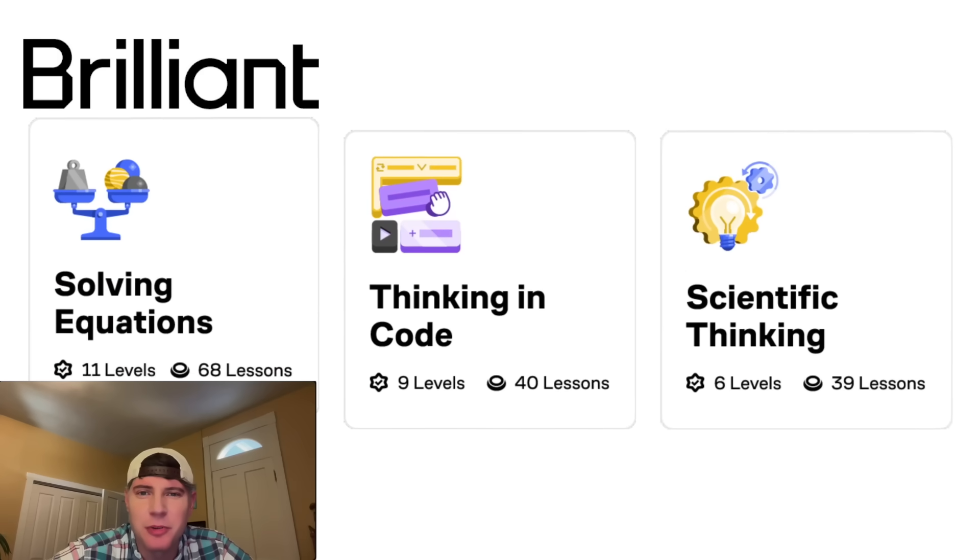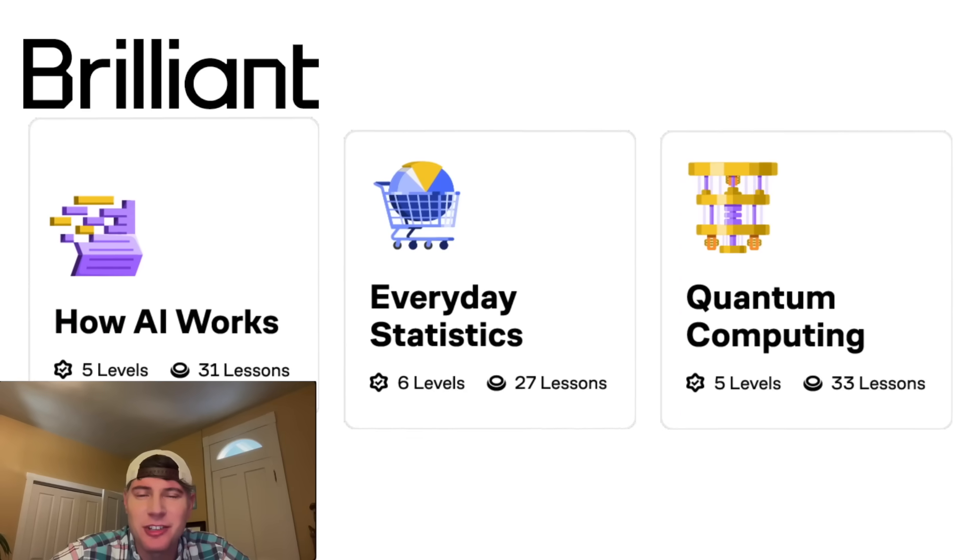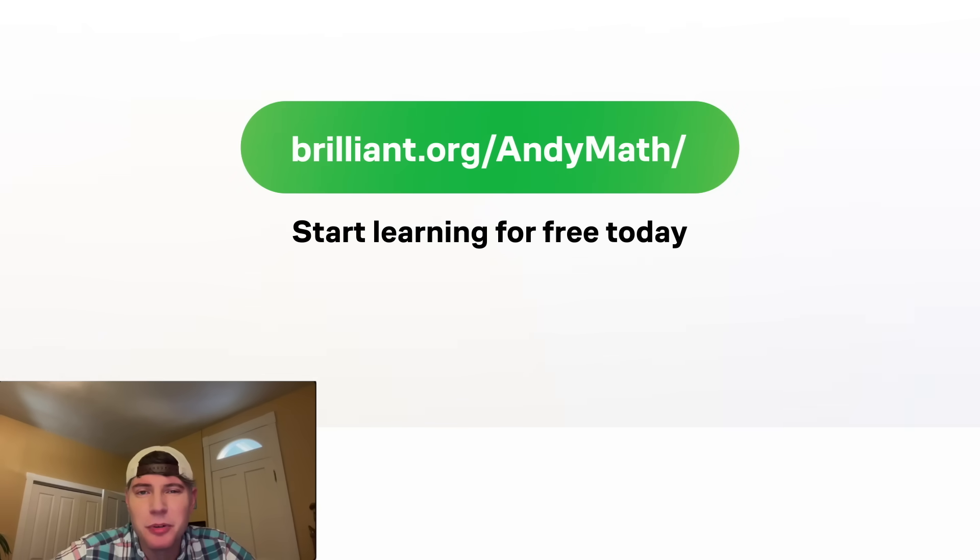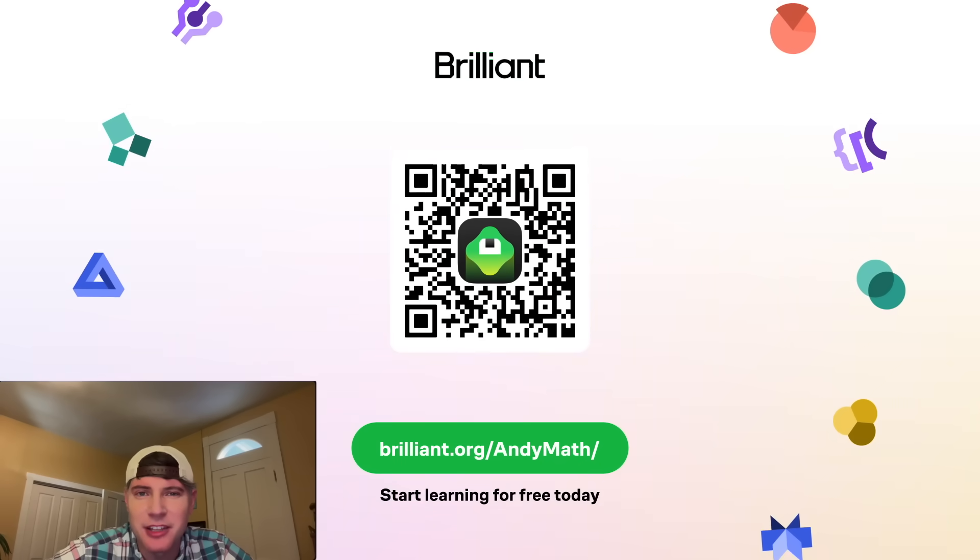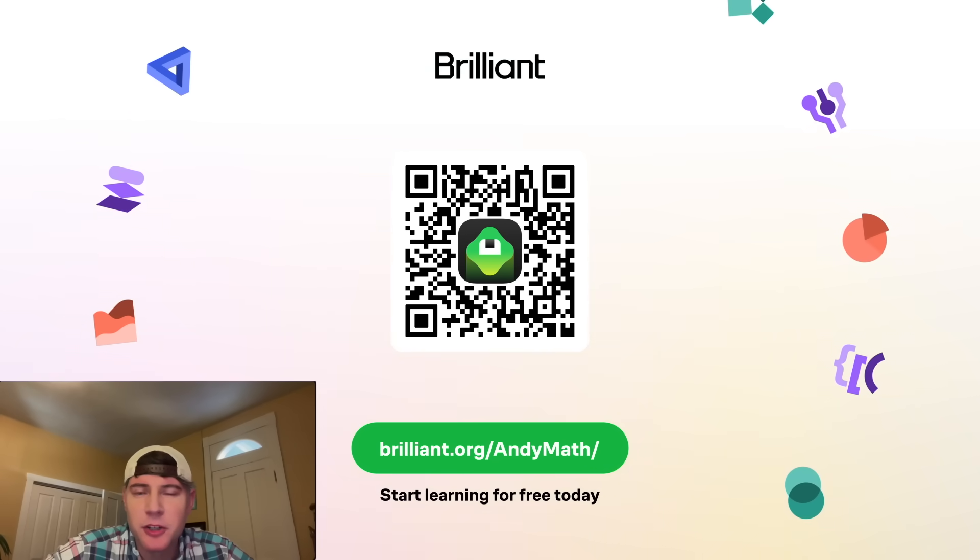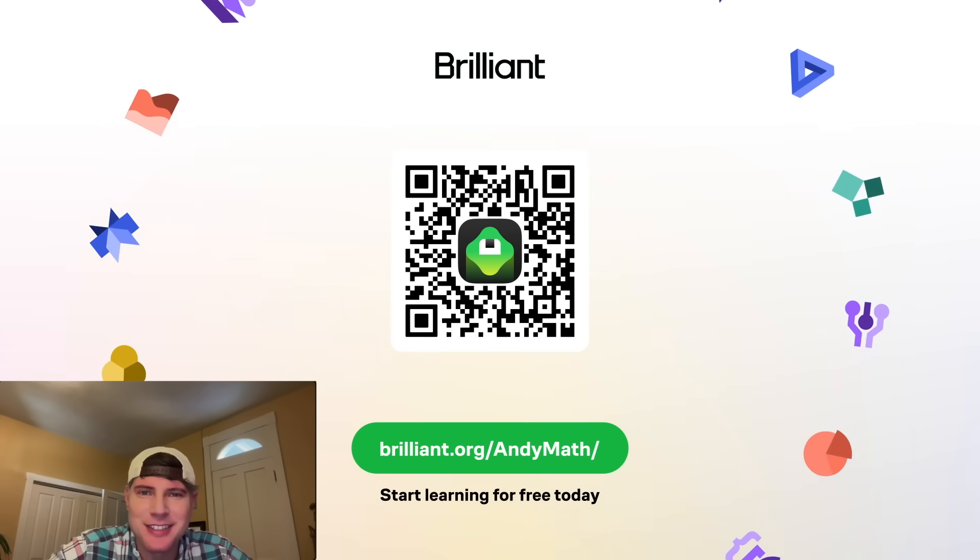There are courses in geometry, algebra, calculus, vectors, probability, all the fun math classes. They also have tons of fun science and programming courses. If you want to try Brilliant, visit brilliant.org slash andymath or scan the QR code on the screen. Or you can click on the link in the description. You can also get 20% off an annual premium subscription. How exciting.